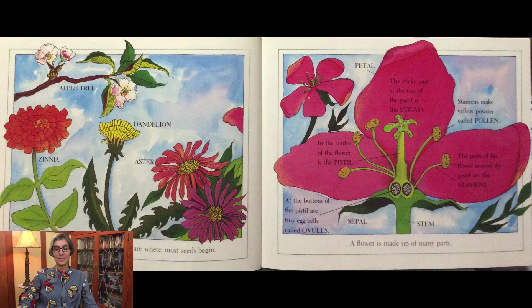The stamens make yellow powder called pollen. The parts of the flower around the pistil are the stamens. And then you can see the stem at the bottom and the petals — the beautiful pink petals at the top.